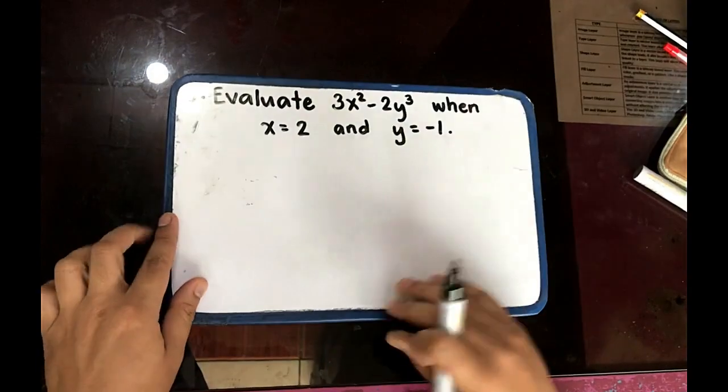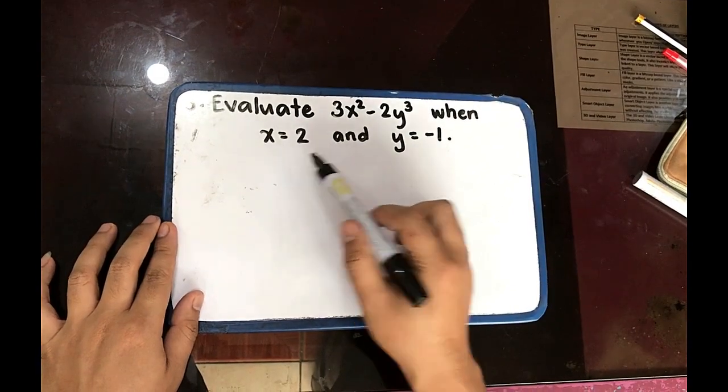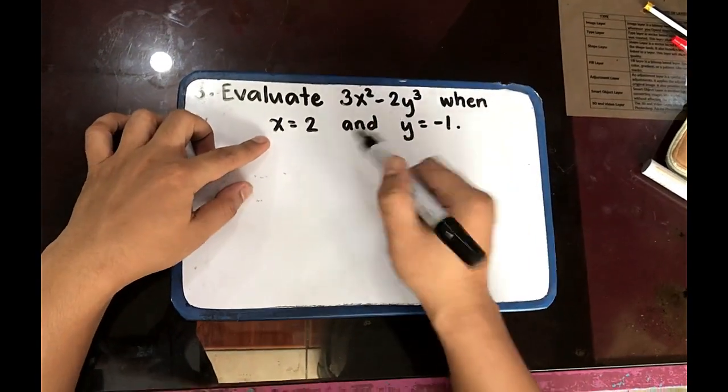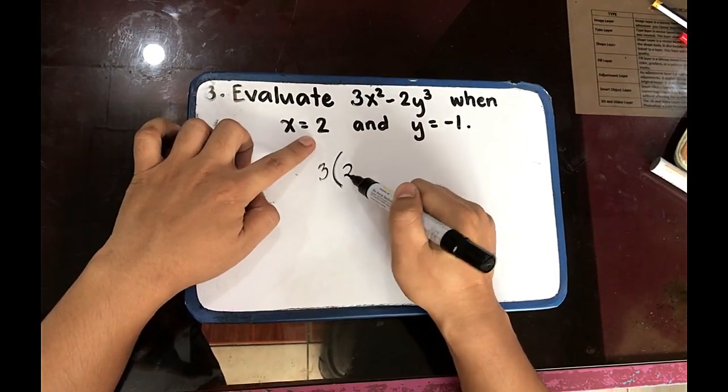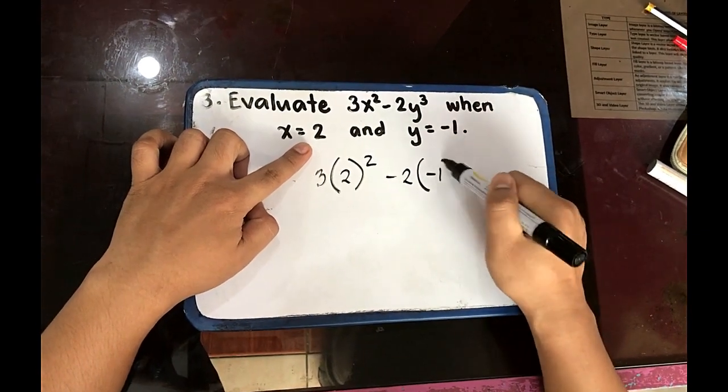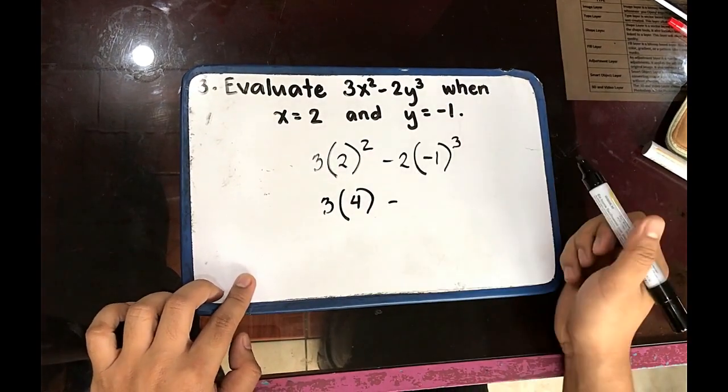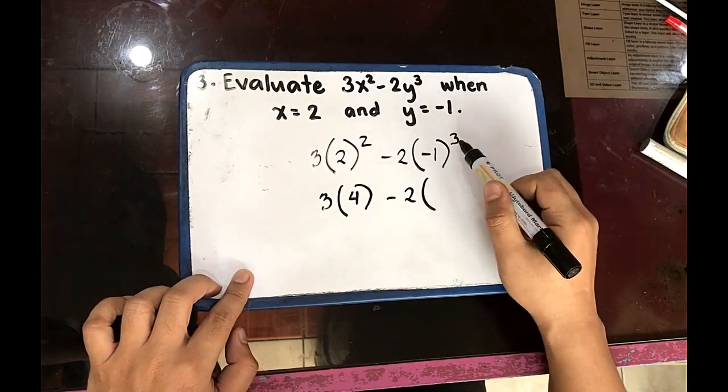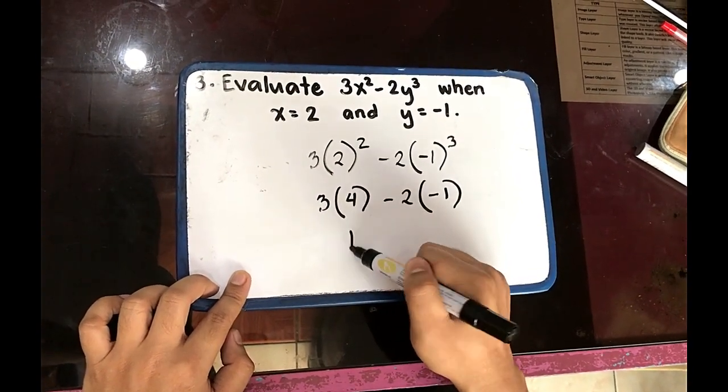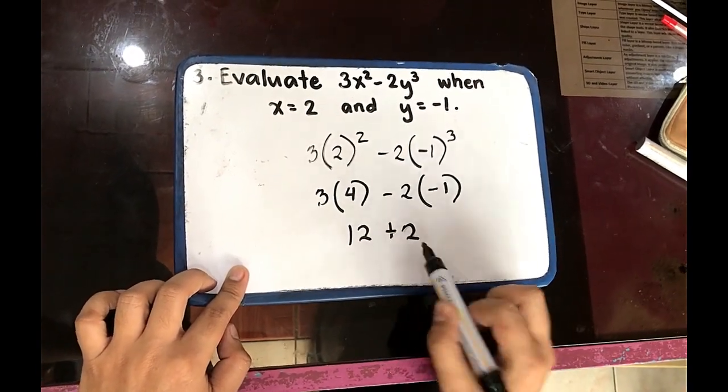Number 3. Evaluate 3x squared minus 2y cubed when x is equal to 2 and y is equal to negative 1. Since we have values for x and y, let us substitute. 3 times 2 square minus 2 times negative 1 cubed. 3 times 4, that is 12. Negative 2 times negative 1 plus 2. 12 plus 2, 14.